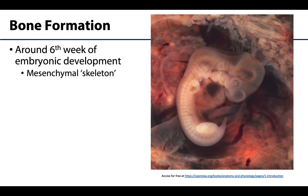All bone formation begins with the formation of an embryonic skeleton composed of mesenchyme. You see this mesenchymal skeleton, and remember in our previous discussions, mesenchyme is an embryonic tissue that almost all connective tissues are derived from. And since bone is a type of connective tissue, that makes sense that it's going to form within a mesenchymal skeleton. This formation begins around the sixth week in utero, and from there bone formation follows one of two patterns.